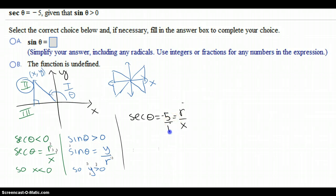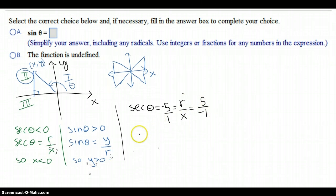We know the definition of secant is r over x again. So I'm going to make this a ratio. By the way, the r can never be a negative value. So I'm going to change this to this. So one possible point could be x is negative 1, and not y, r is 5.